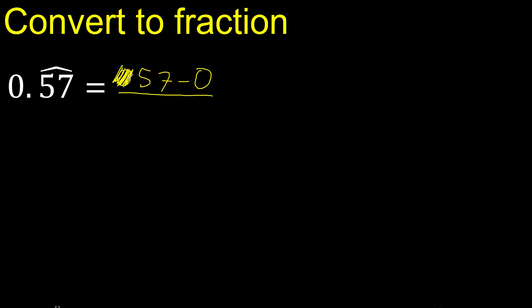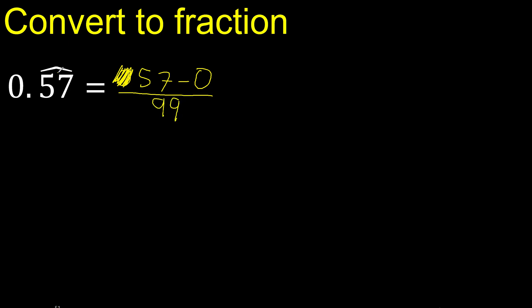Eliminate 0. Here, after the point there are 2 numbers with a symbol. Therefore 2, 9, 1, 2 — 2 numbers. 2, 9 — always 9.